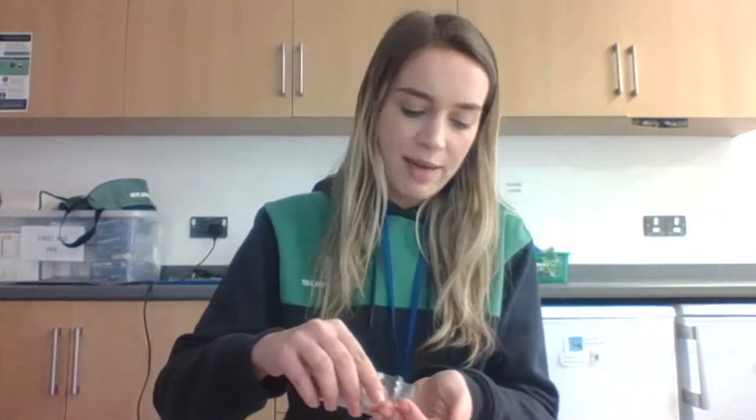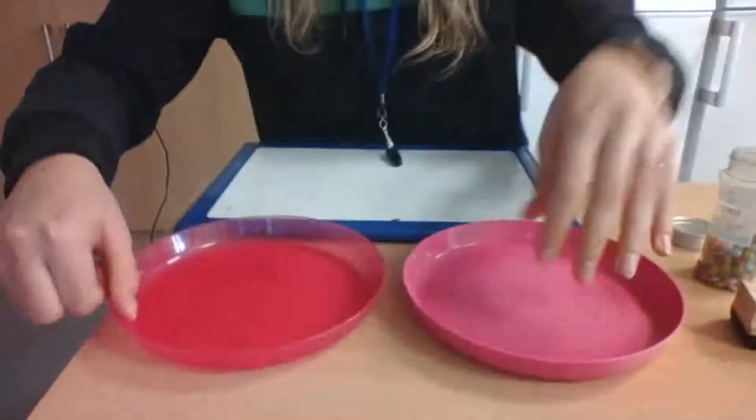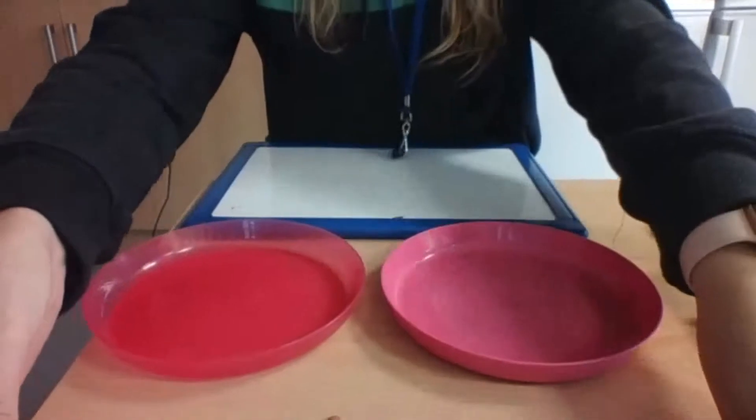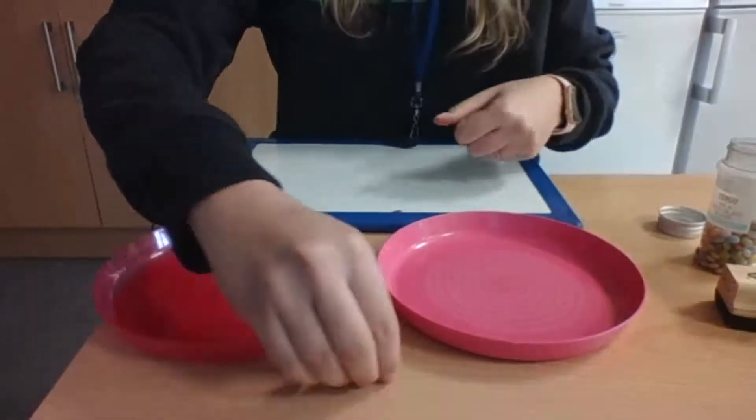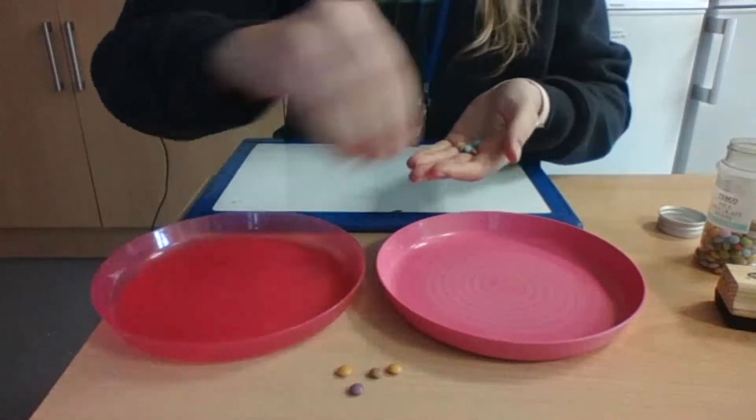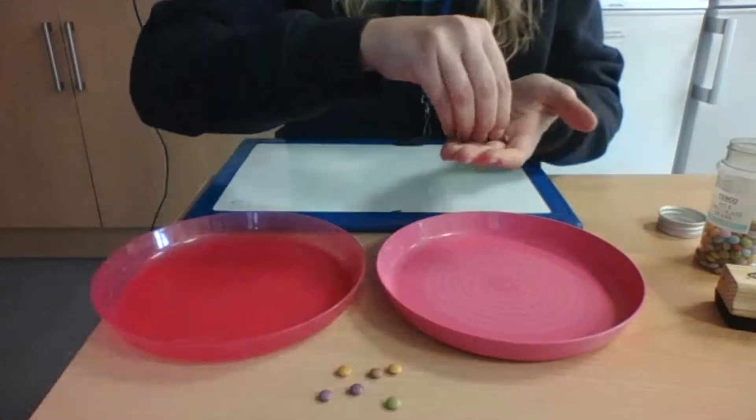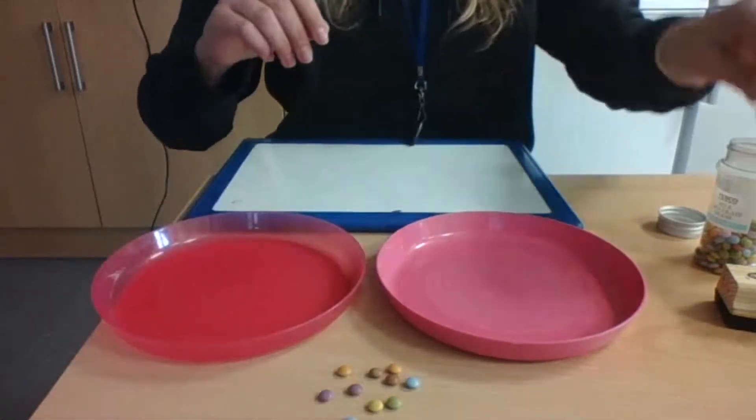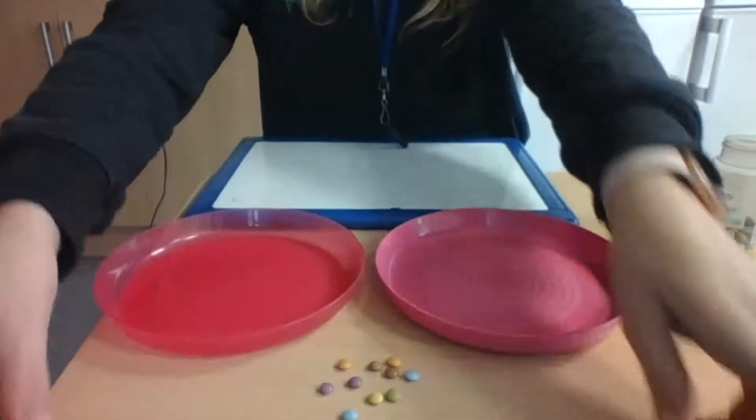Right, we are going to have a look at number bonds to 10. Now I'm just going to get my 10 smarties to make sure that there are definitely 10. I'm going to turn you down to my table so that you can see. So I've got 1, 2, 3, 4, 5, 6, 7, 8, 9, 10. I have got 10 smarties.